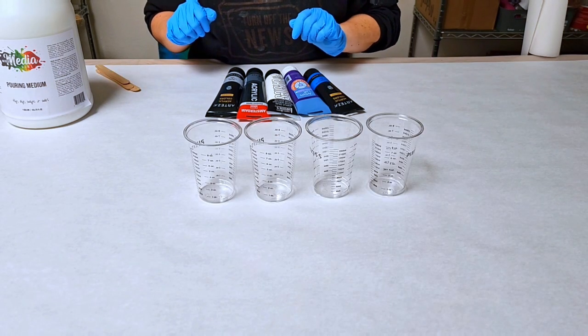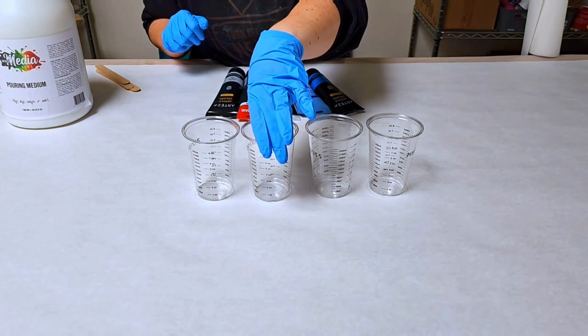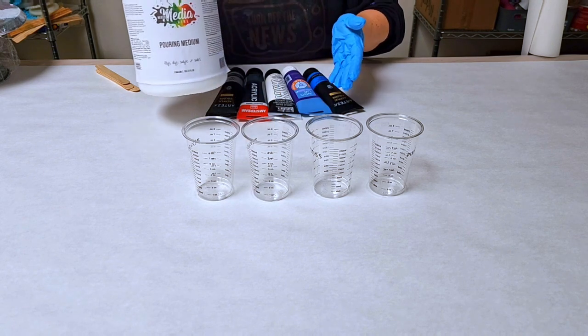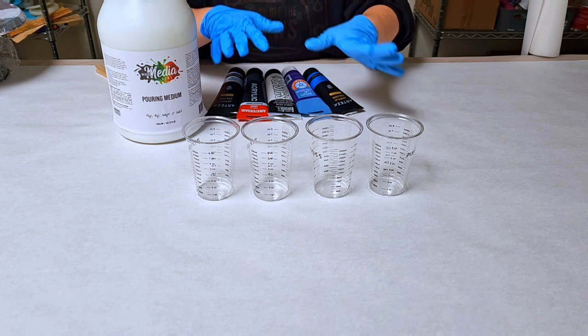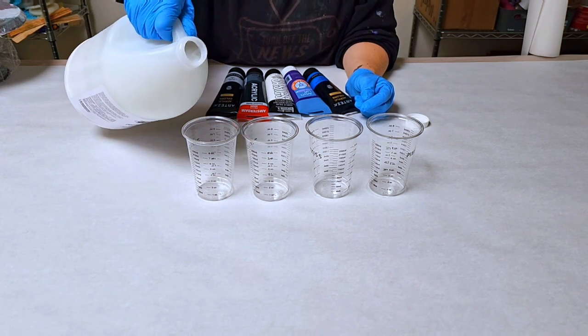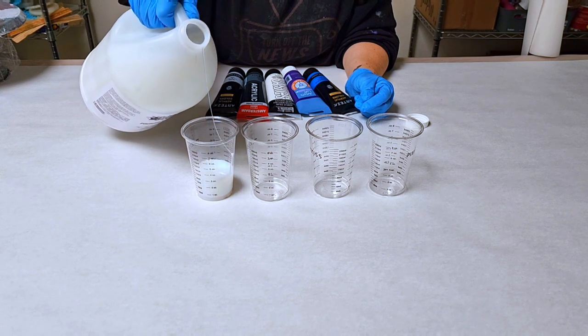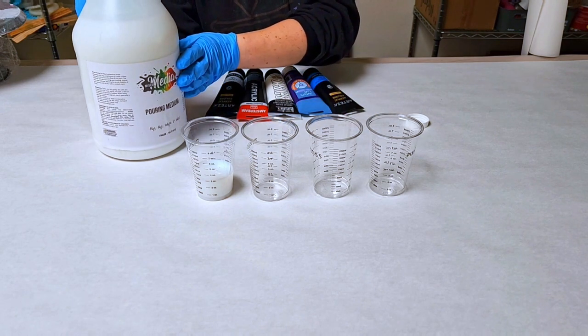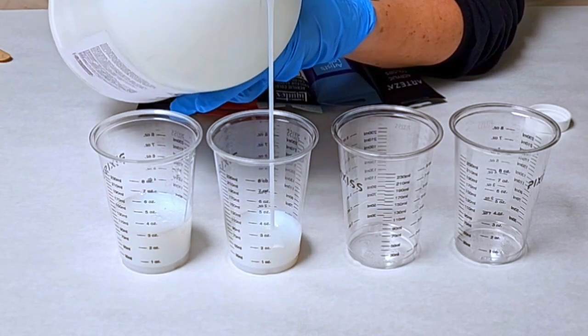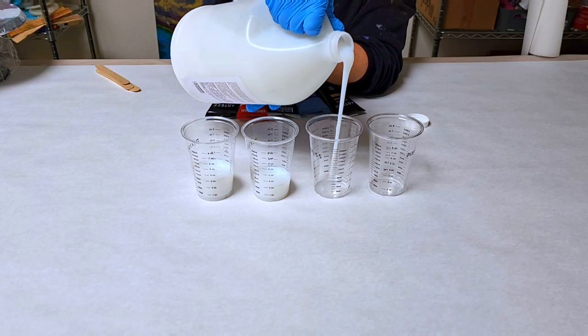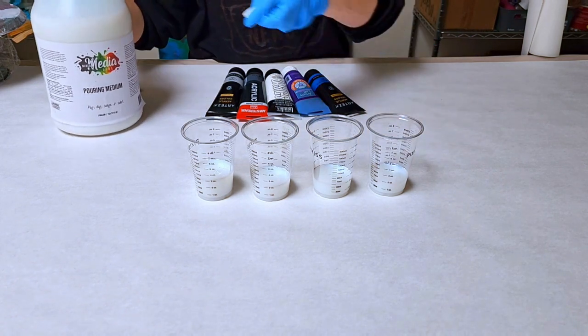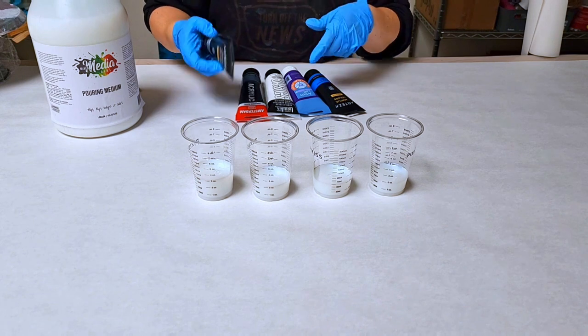So I'm going to mix up four acrylic pouring colors here and I have these awesome Pyxis measuring cups which makes it very easy. One difference is that you shouldn't need to strain this. I've had bottles for months and not had any issues with the stringing that you'll get in Floetrol. I have formulated this to mix pretty much the same as Floetrol but it is a little bit thinner, closer in consistency to Golden's GAC 800. I'm going to mix this up two-thirds of the pouring medium to one-third of the paint.